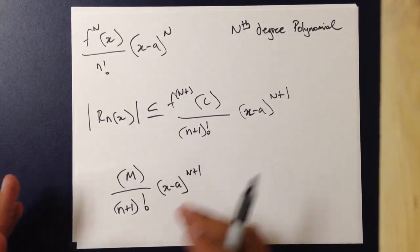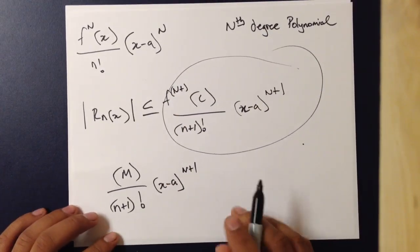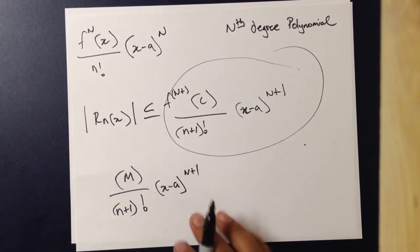And that is because you're trying to maximize this number. You're trying to make this number as large as possible. Let's look at this in an example.